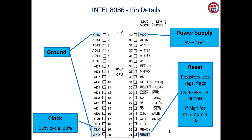Pin number 21 is the reset signal. The reset signal is used to reset the general purpose registers, flag registers, and segment registers. The general purpose registers include the accumulator (AX), base register (BX), count register (CX), data register (DX), stack pointer, base pointer, source index, and destination index. Pin number 21 resets all of these as well as the segment and flag registers.